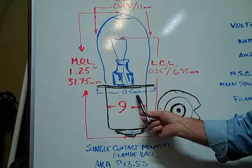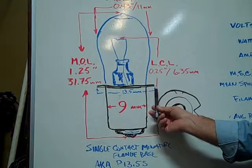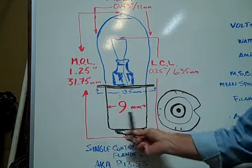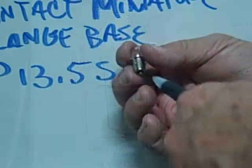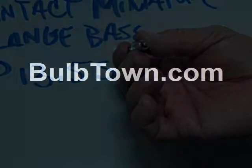The 13.5 millimeters is actually the diameter of the flange and the base has a diameter of 9 millimeters with a single contact. This is an example of a PR1 Miniature Flange Base Bulb.